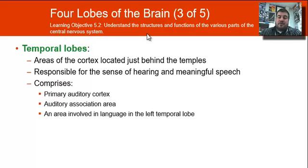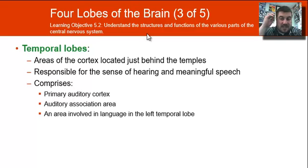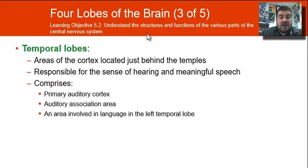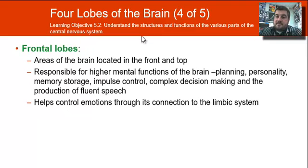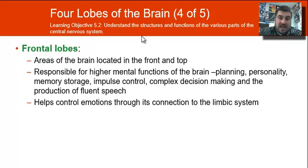Your temporal lobe is just behind the temples. It is responsible for hearing and meaningful speech, and it has your primary auditory cortex, your auditory association area, and an area involved in language in the left temporal lobe. Your frontal lobe is up front and takes care of planning, personality, and memory — all of the higher-order thinking takes place in your frontal lobe.